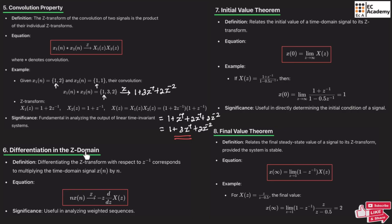The next property is differentiation in the Z-domain. If we multiply x(n) by n and take the Z-transform, it results in differentiation of X(z). Specifically, Z{n·x(n)} = −z · (d/dz) X(z). This property is useful in analyzing weighted sequences.